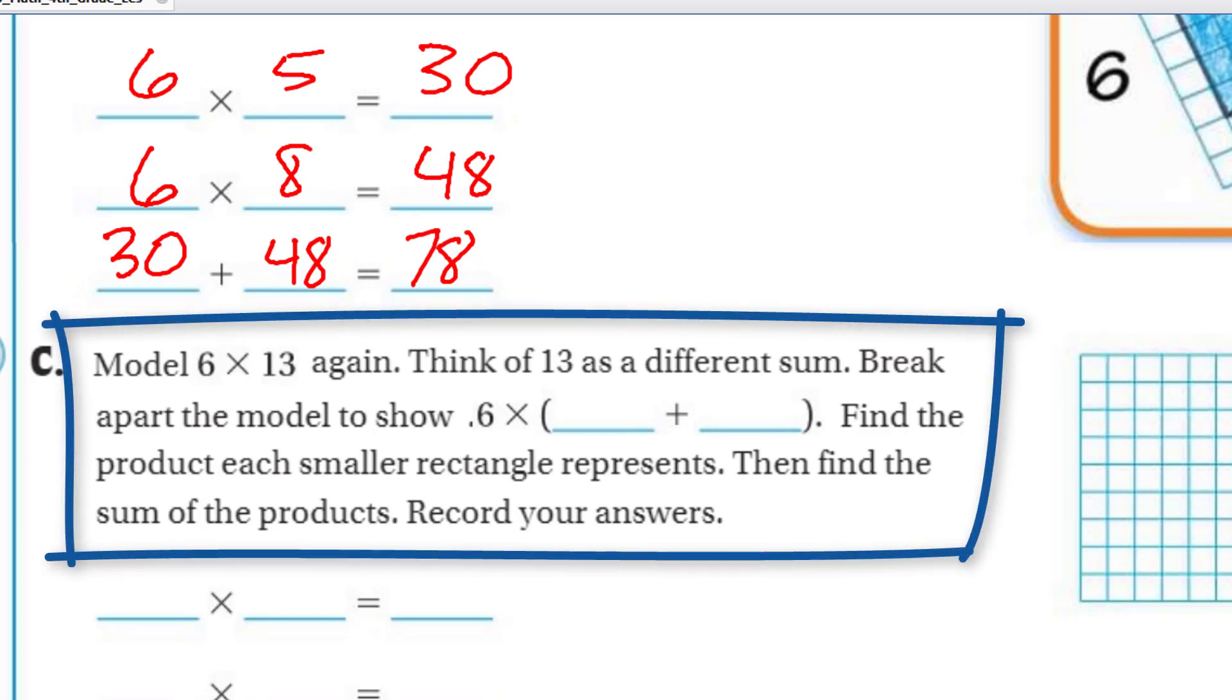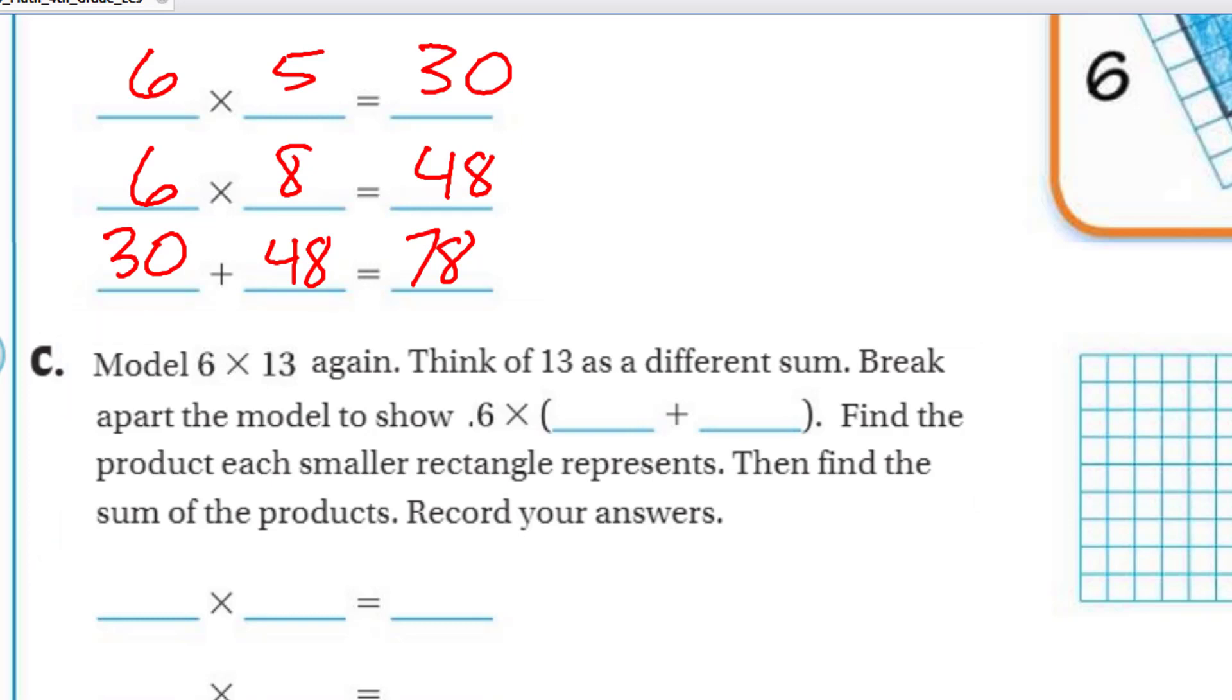Now it says model 6 times 13 again. Think of 13 as a different sum. Break apart the model to show 6 times blank blank. Find the product each smaller rectangle represents. Then find the sum of the products. Record your answers. Oh, cool. I get to do my own. Let me see. First, let me get my rectangle. Well, I have my rectangle, which is the 6 times 13. I also have my line that's going to break that 6 times 13 model apart. So what are two addends that equal 13? I like, let me go with 4 and 9. Yeah, 4 plus 9 is equal to 13. So let me do that one. So I'll make sure I have 1, 2, 3, 4.